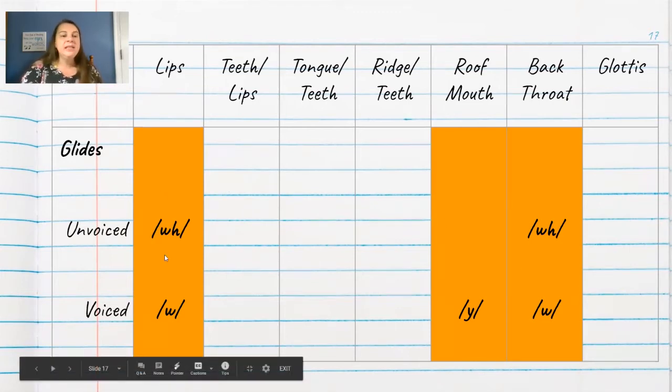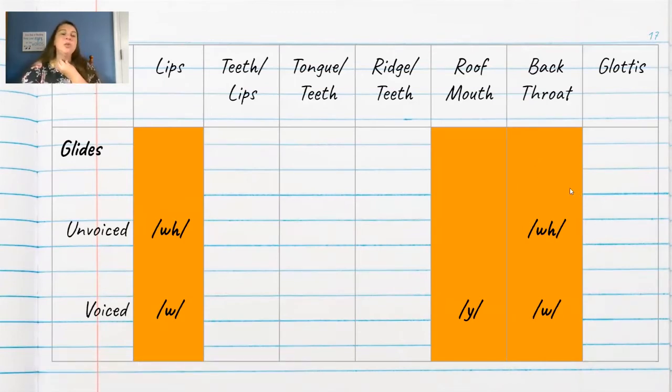You'll notice that these sounds are both in the lips category and the back of the throat category. The sound starts in the back and you're really using your lips to help articulate that sound.